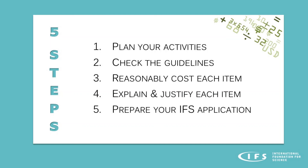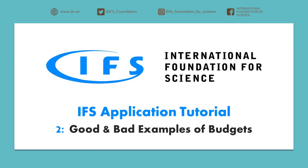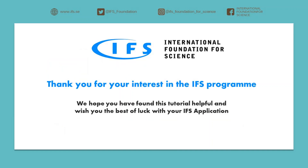And that's it. Just remember those five steps: plan your activities, check the guidelines, cost each item, explain and justify them, and prepare your IFS budget accordingly. Now that you have finished the IFS budget tutorial, we recommend that you do some more background reading. There are many useful articles on how to prepare a budget online — we recommend 'How to make a simple research budget' on the Research Whisperer blog, and 'How to budget your grant proposal' on the Science website. Also check out part 2 of the IFS application tutorial video, where we will go through some examples of good and bad budgets. Thank you for your interest in the IFS program, and we hope you have found this tutorial helpful. We wish you the best of luck with your IFS application. For more information, please visit www.fasr.org.